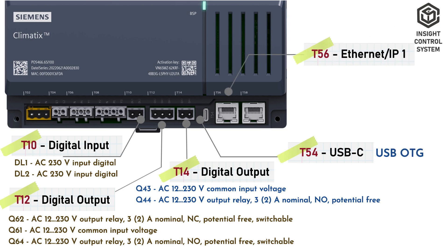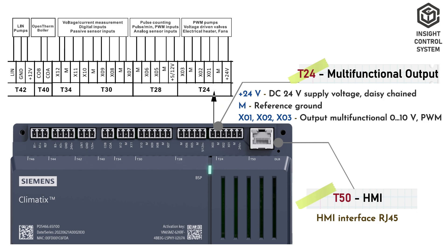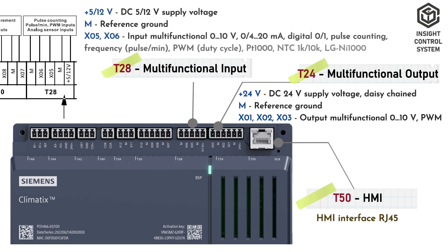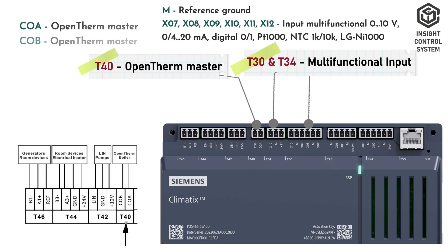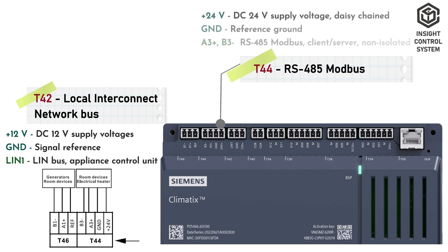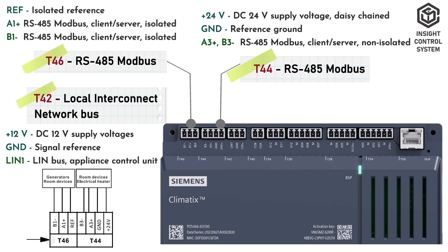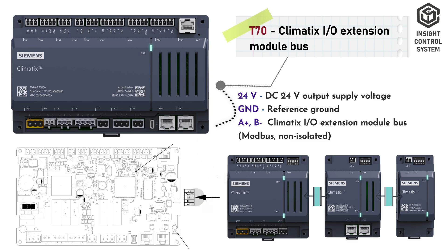Terminal T14 is digital relay output for potential-free relays. T54 is USB OTG port. T56 is Ethernet IP1 port. T58 is Ethernet IP2 port. T50 is RJ45 HMI interface port. Terminal T24 is multifunctional outputs and DC 24 volt supply voltage for daisy-chained devices. Terminal T28 is pulse width modulation inputs and DC 5 or 12 volt supply voltage. Terminals T30 and T34 are multifunctional input ports. Terminal T40 is OpenTherm master for thermostat controls. Terminal T42 is local interconnect network bus port. Terminal T44 is RS485 Modbus client/server non-isolated and DC 24 volt supply voltage for daisy-chained port. Terminal T46 is RS485 Modbus client/server isolated port. T70 is DC 24 volt output supply and Klimat XI/O extension module bus.